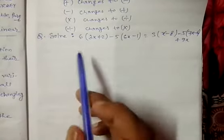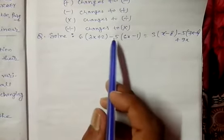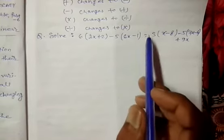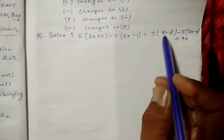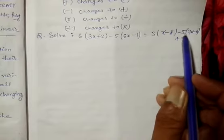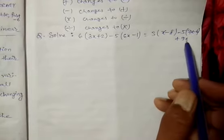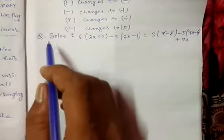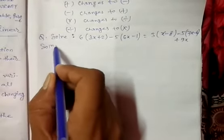Now let's see some examples. Question: 6(3x+2) - 5(6x-1) = 3(x-8) - 5(7x-6) + 9x. Here is the solution.